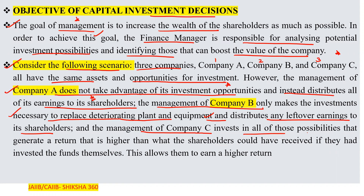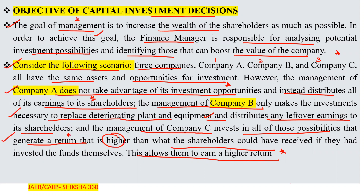The management of Company C invests in all those possibilities that generate a return higher than what the shareholders could have received if they had invested the funds themselves. This allows them to earn a higher return. So: Company A distributes all earnings without any investment; Company B invests only as per replacement requirements and distributes the rest; Company C invests in all possibilities generating superior returns — giving maximum return in the case of Company C.